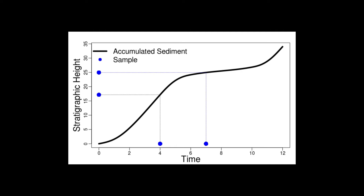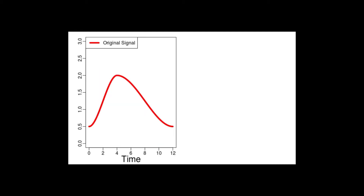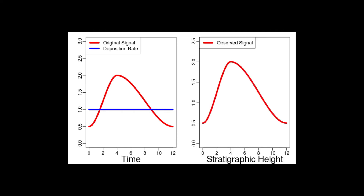The same approach also works for more complex data structures like phylogenetic trees. On a slightly more abstract level, the model also allows transforming signals from time into stratigraphic height. Here the signal is shown in red, and it is combined with a deposition rate — which in this case is constant — to determine what pattern will be observed in stratigraphic height in the outcrop.